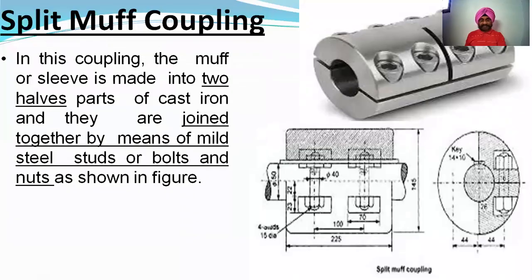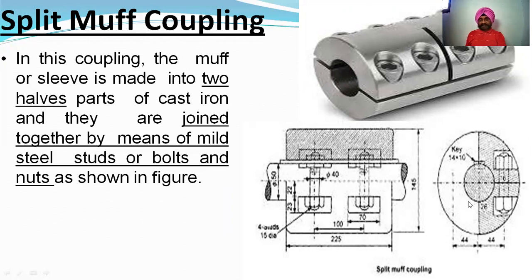Next is split muff coupling, also called clamp coupling. Split muff coupling is made in two halves of cast iron and they are joined together by means of mild steel studs or bolts.